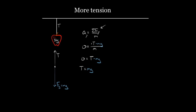You might think that was way more trouble than it had to be — you just knew it was mg; the tension just has to balance gravity. But the reason we go through all this is that it won't always be equal to mg. So if you want to know what to do when it's not, you have to know how to use this process well.